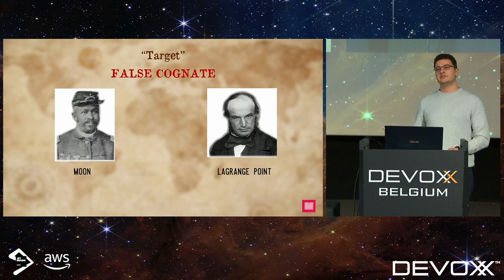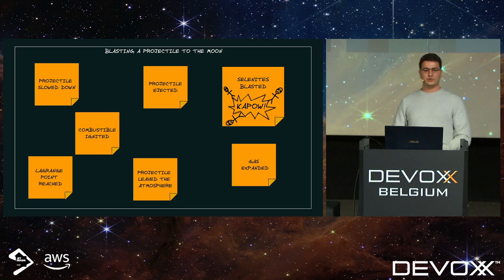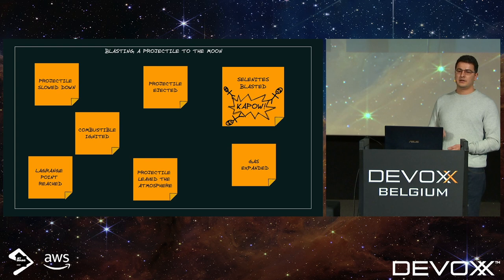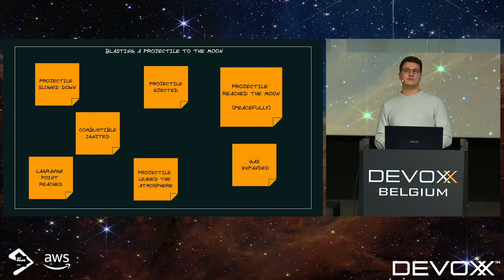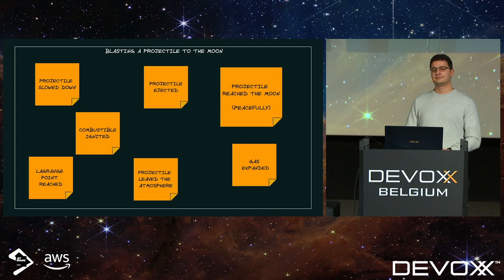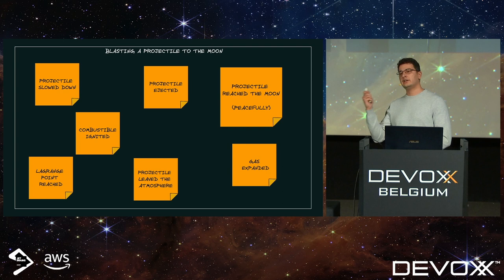The right thing to do is to disambiguate and have different terms for different concepts. For the moon, we simply say 'the moon.' For the equilibrium point, we use an astronomy term: the Lagrange point. Now it's impossible to be confused about these two in the code — you have two different classes, two different variable names. We change the post-it to 'Lagrange point reached.' It's also a great moment to align everyone on the purpose: we're not trying to kill the inhabitants of the moon, we're trying to reach it peacefully. Had we done this workshop first, we would have saved weeks of wrong development with just a few hours of workshop.